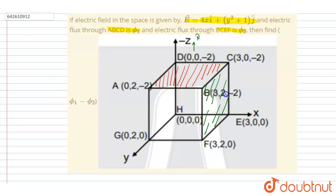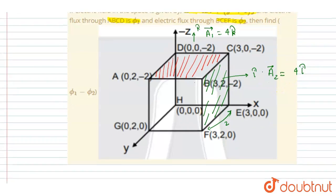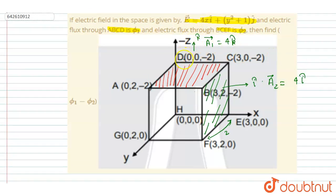The area vector for BCEF is in the î direction. The length is 2 and this length is also 2, so the area vector A2 = 4î. For ABCD, the area vector A1 = 4k̂. So we now have the area vectors for both surfaces.